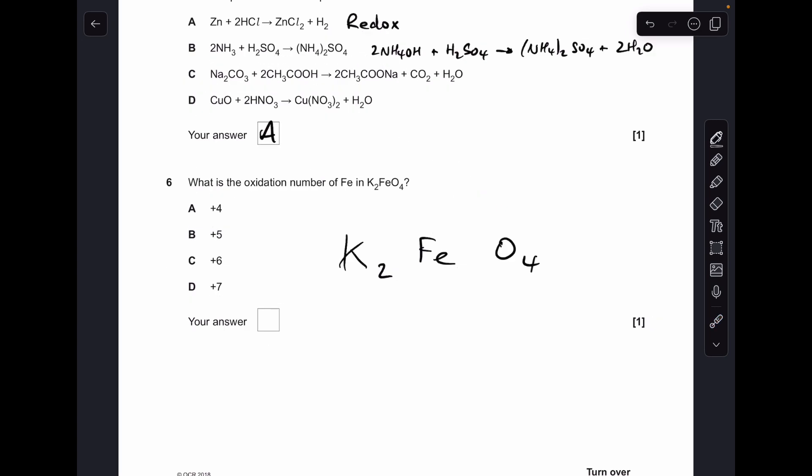Number 6, so the first thing we'll do is put in the oxidation numbers for the known atoms, so those 2 potassiums plus 1 each, those 4 oxygens minus 2 each. So, what does the iron need to be, to sort of give no overall charge, it needs to be plus 6, so option C.